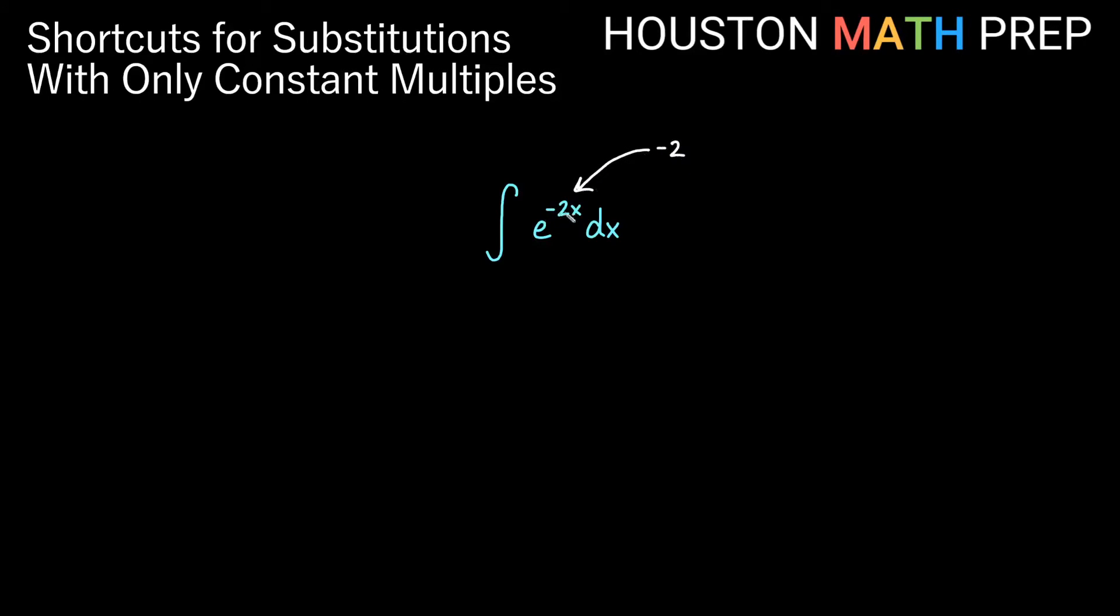If we were doing the derivative we would get multiplied by negative 2 coming out front. So in this instance we actually get divide by negative 2. So our antiderivative without doing the substitution here would actually be e to the negative 2x divided by negative 2 plus c.